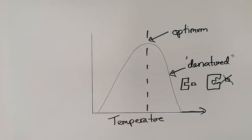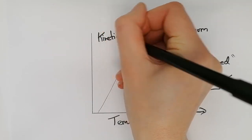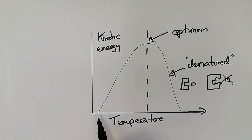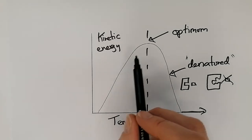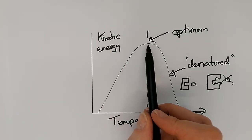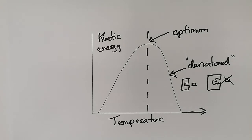As temperature increases, this is all about kinetic energy — the energy of movement. When things are too cold, there isn't enough kinetic energy for the reaction to take place. As it gets warmer, there is more kinetic energy, so the rate of photosynthesis increases. At the optimum point, there is so much kinetic energy that the plant can't photosynthesize any faster. After that point, it gets too hot, enzymes begin to denature, and once all enzymes are denatured, the graph flatlines.